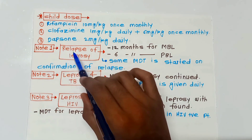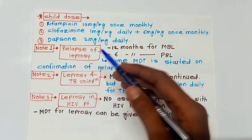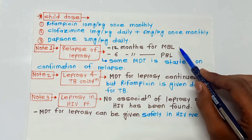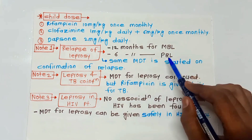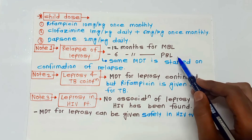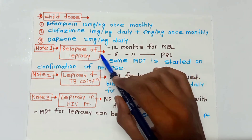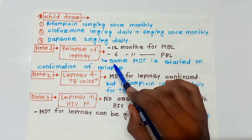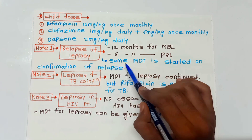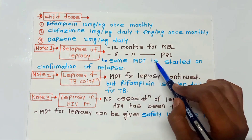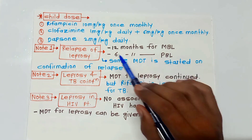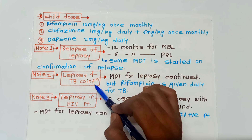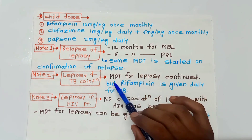There are three important notes. Note 1 — Relapse: the relapse period for leprosy is 12 months for multi-bacillary leprosy and six months for paucibacillary leprosy. As soon as we confirm a relapse, we start the same MDT or multi-drug treatment.